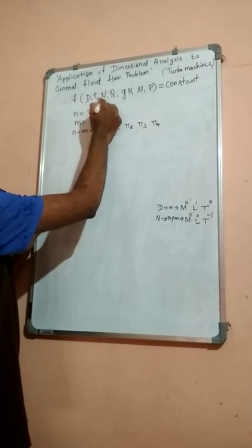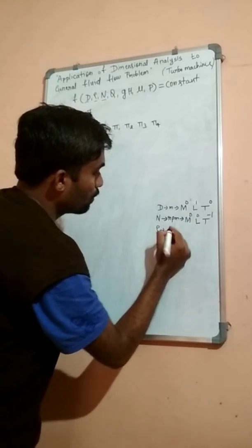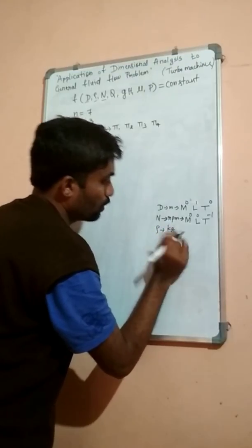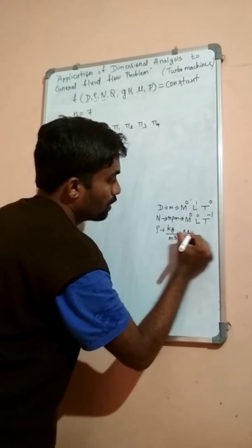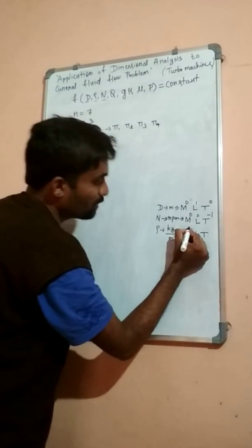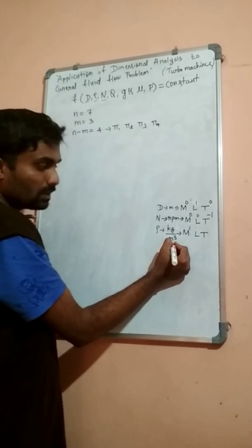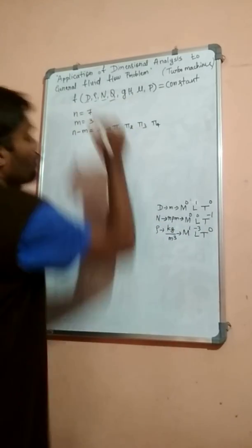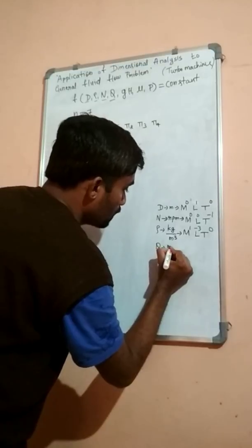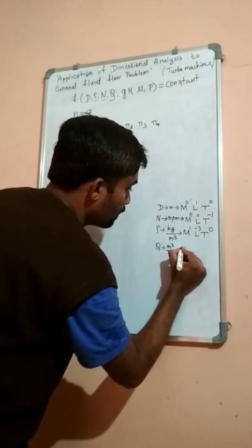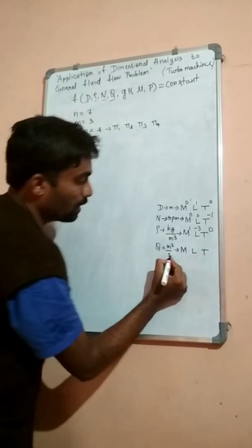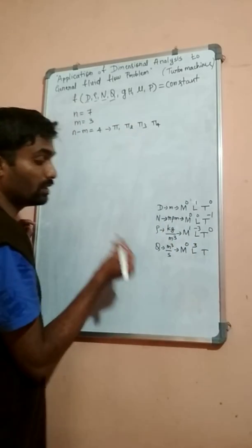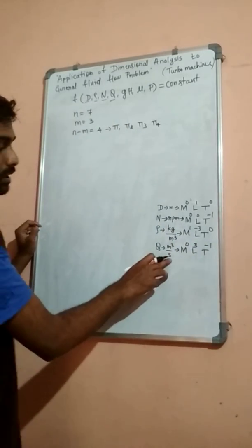Next we consider rho, which is density — mass by volume, kg per meter cube. In terms of M, L, T: mass term is 1, meter cube is in the denominator so L raise to minus 3, and T raise to 0. Next we consider Q, discharge, in meter cube per second. So M raise to 0, L raise to 3, T raise to minus 1.